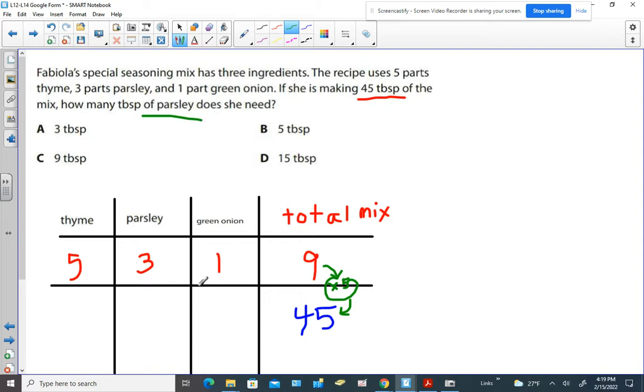So really the only one that you really need to do is to do the three times five to get this number right here because that's what they're asking for. So just finish up by multiplying three times five.